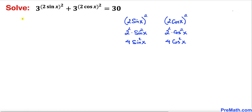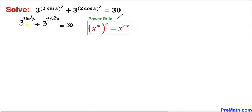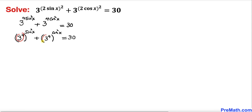So our equation becomes 3^(4 sin²x) plus 3^(4 cos²x) equals 30. Now let's recall the power rule. Applying it to the exponents, we can write this as (3^4)^(sin²x) plus (3^4)^(cos²x). We know that 3^4 equals 81.